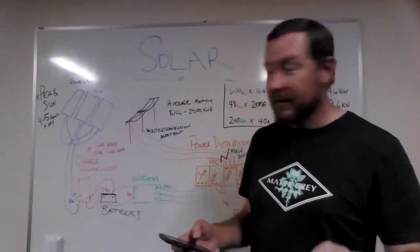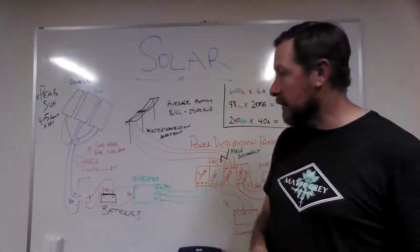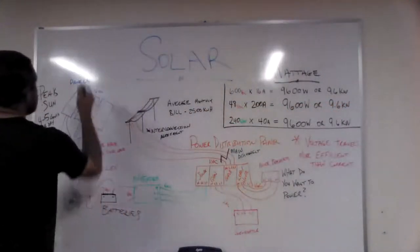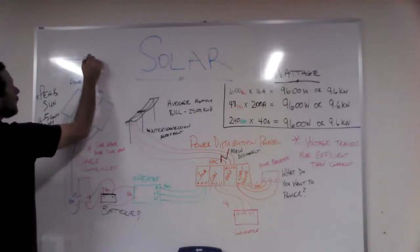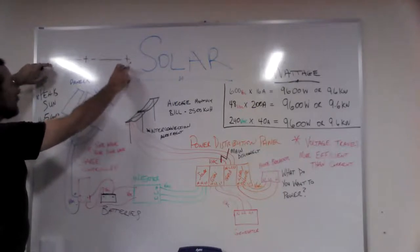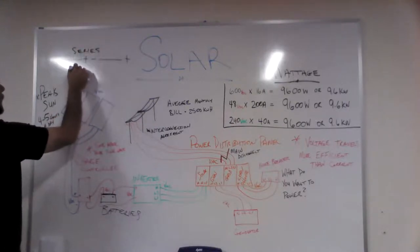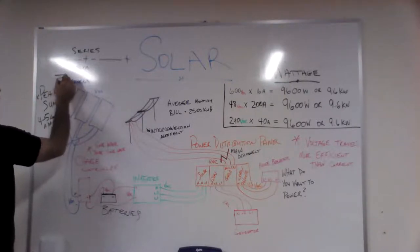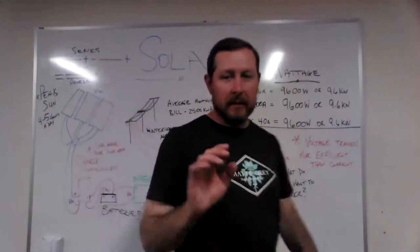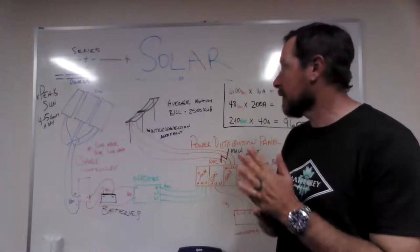Series wiring is when you connect positive to negative through the string, leaving a single positive and negative on the ends — this adds voltage. Parallel wiring is when you tie all the negatives together and all the positives together — this adds current while keeping voltage the same. Understanding series versus parallel is important because it changes how much current you're pushing versus your voltage.